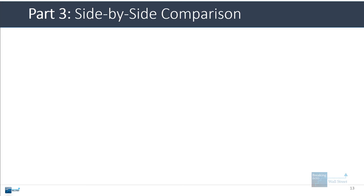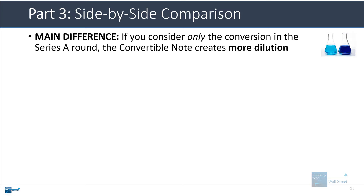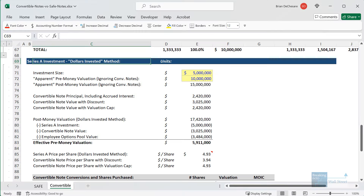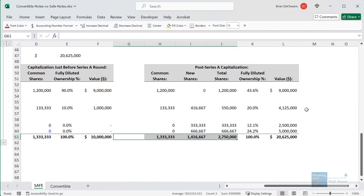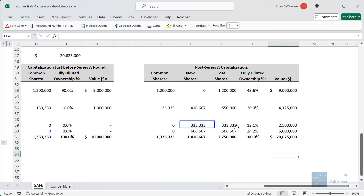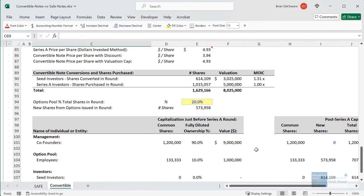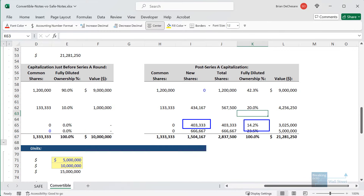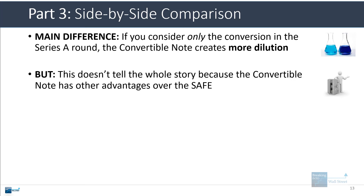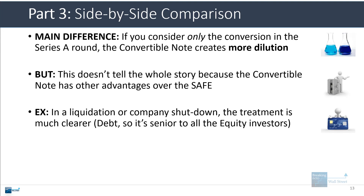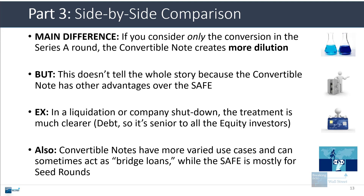Now, if we do a side-by-side comparison of the convertible note versus the safe note, clearly the convertible note creates more dilution. The seed investors with a safe note own 333,000 shares and 12% of the company, but with a convertible note they own over 400,000 shares and 14% of the company. However, this is a little deceptive because the convertible note has some other advantages. In the case of a liquidation or company shutdown, the treatment is much clearer — it's debt, so it's senior to all preferred equity and common equity, giving investors first claim to the company's assets. Convertible notes can also be used in more cases and sometimes act like bridge loans similar to venture debt, whereas safe notes are mostly for seed rounds.